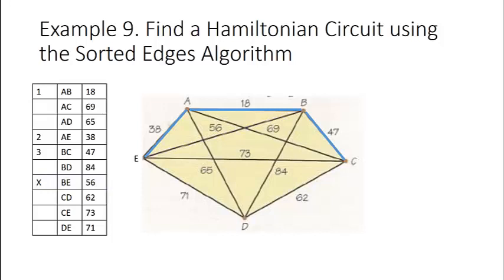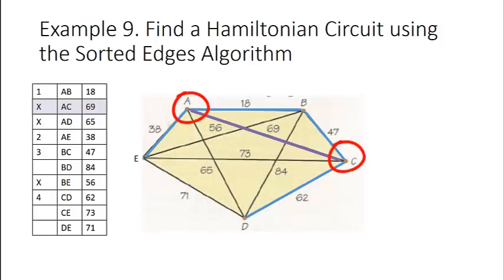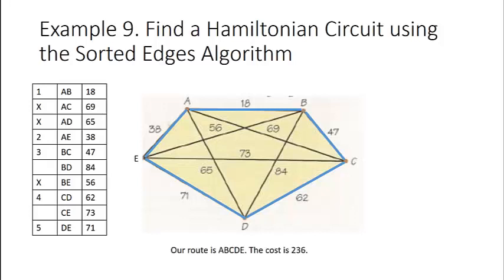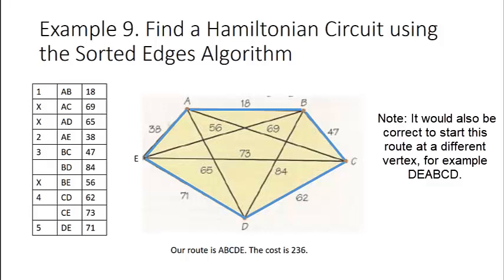Next on our list is CD at 62 — we can take that with no problem. Next is AD at 65, but we must skip it because it would create three edges at vertex A. Then AC at 69 must also be skipped because it would create three edges at vertices A and C. Finally we get DE at 71, which closes off our circuit and we're done. Our route is A, B, C, D, E and the cost is 236.